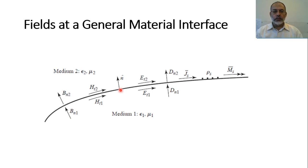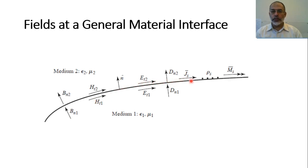To solve these boundary conditions, we are going to analyze the fields into tangential field components and normal field components. The normal field components have a separate boundary condition, and the tangential field components have another. We assume that at the interface between the two mediums, there is a surface current density J_surface, surface charge density ρ_surface, and magnetic surface current density M_surface.